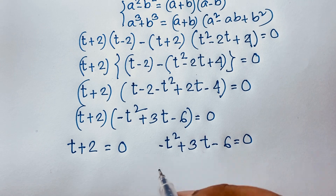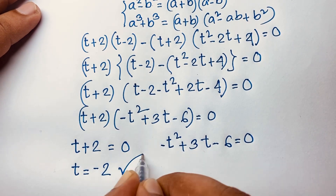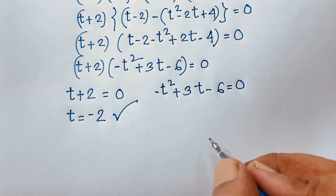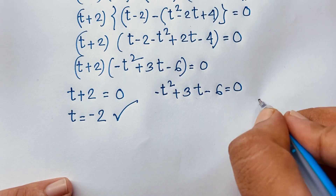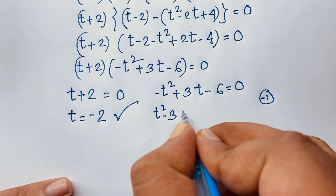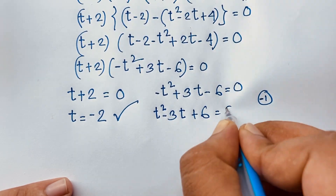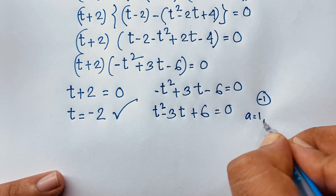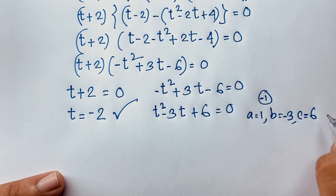Now we will find out 2 cases. Our first case: t plus 2 is equal to 0. The other case, we will find a nice quadratic equation: minus t square plus 3t minus 6 is equal to 0. From the first case, t is equal to negative 2 — this is our real solution. For the quadratic equation, if I multiply both sides by negative 1, it will be t square minus 3t plus 6 is equal to 0. Now, a is equal to 1, b is equal to minus 3, and c is equal to 6.